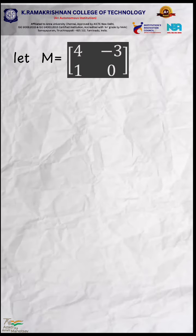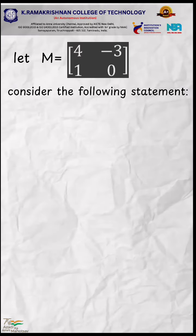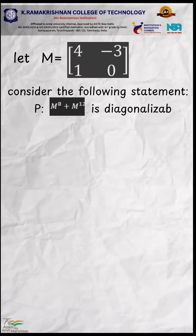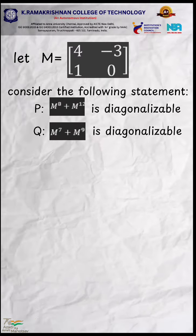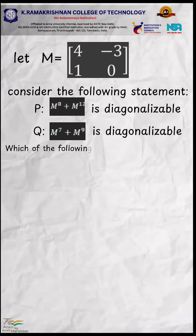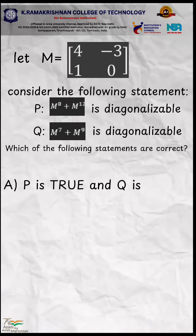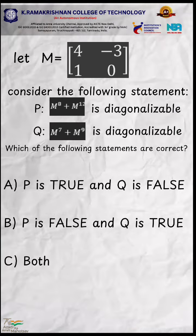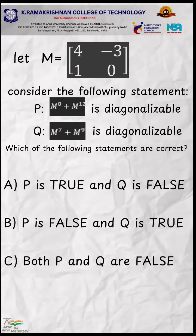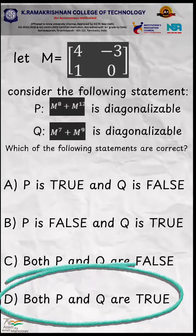Let M be equal to the matrix [4, -3; 1, 0]. Consider the following statements: P — M power 8 plus M power 12 is diagonalizable; Q — M power 7 plus M power 9 is diagonalizable. Option A: P is true and Q is false. Option B: P is false and Q is true. Option C: both P and Q are false. Option D: both P and Q are true. The answer is option D.